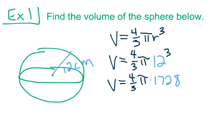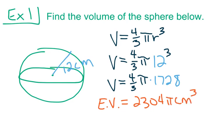To get our exact volume, as we've been doing all module long, our exact volume will have pi as part of the answer. We take 4 thirds times 1,728 — you can do 1,728 multiplied by 4 divided by 3 as one line of math — and that gives us 2,304 pi centimeters cubed. That is the exact volume of a men's NBA basketball.